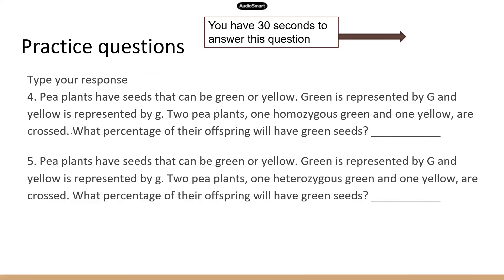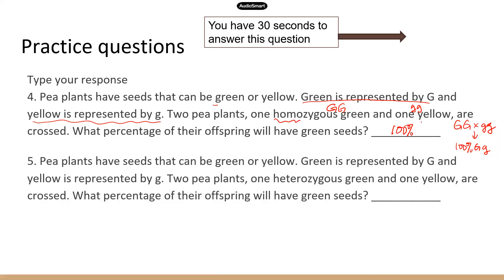Next is a fill-in-the-blank question. Pea plants have seeds that can be yellow or green. Green is represented by big G — so that's the dominant allele — and yellow is represented by little g. Two pea plants: one homozygous green (big G big G) and one yellow — the recessive trait, so little g little g — are crossed. What percentage of their offspring will have green seeds? This generates 100% big G little g offspring, so the percentage with green seeds is 100%.